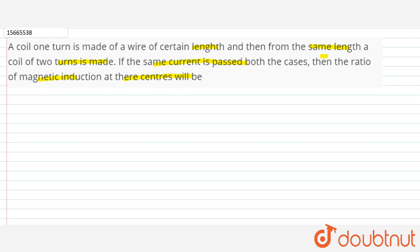So, we know that magnetic induction at the center, it is a loop. So, the magnetic induction is given by mu naught ni upon 2r. So, n is the number of turns and r is the radius. First case is the coil having one turn.